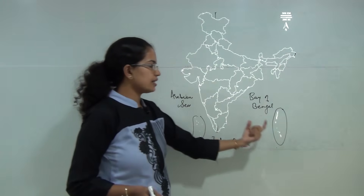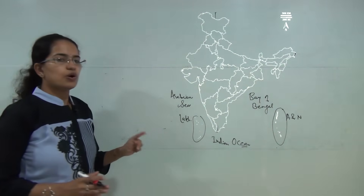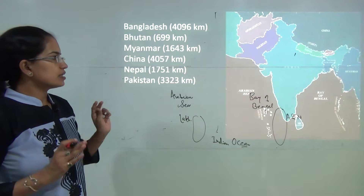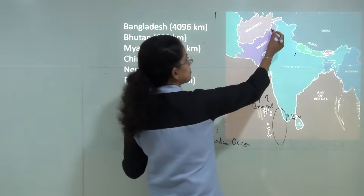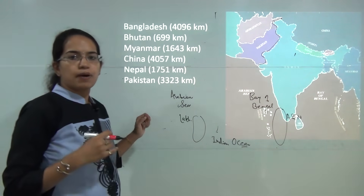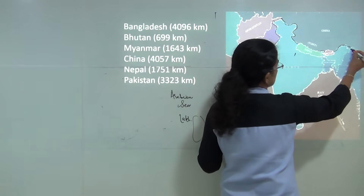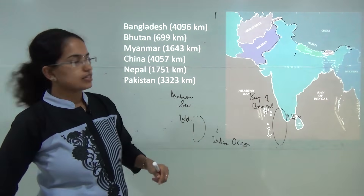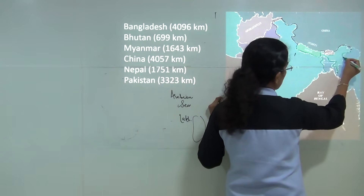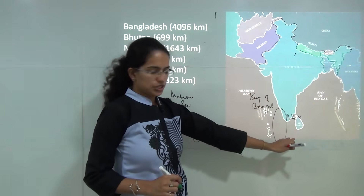Except Lakshadweep and Andaman and Nicobar Islands, all other states and union territories are part of the Indian mainland. Neighboring countries sharing land boundaries with India include Pakistan to the west, a small section of Afghanistan through Pakistan-occupied Kashmir, China to the north with a significant boundary, and then Nepal, Bhutan, Bangladesh, and Myanmar.